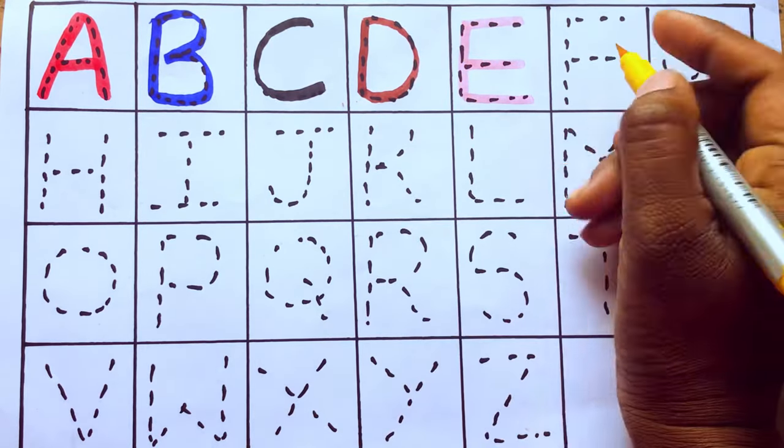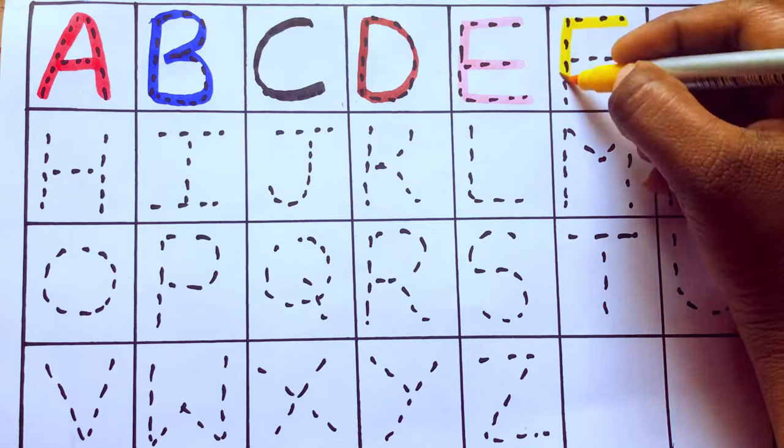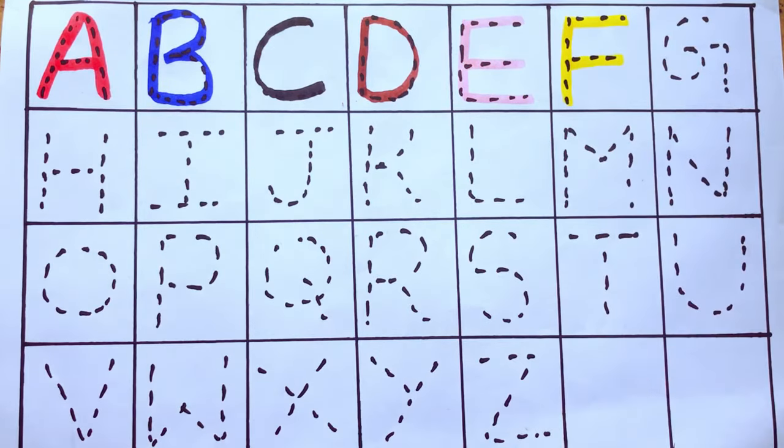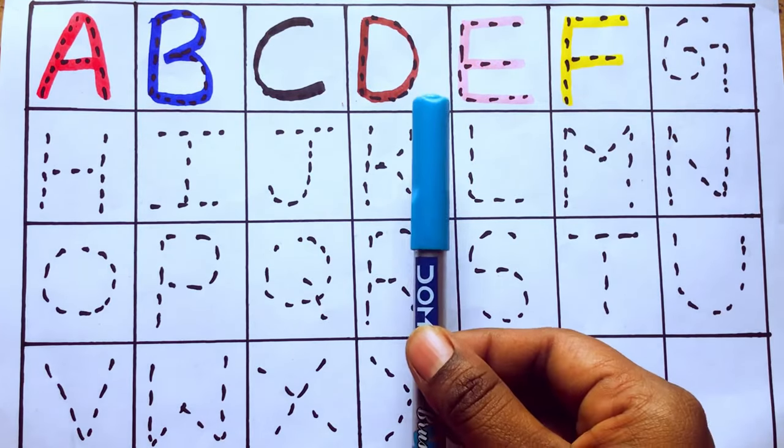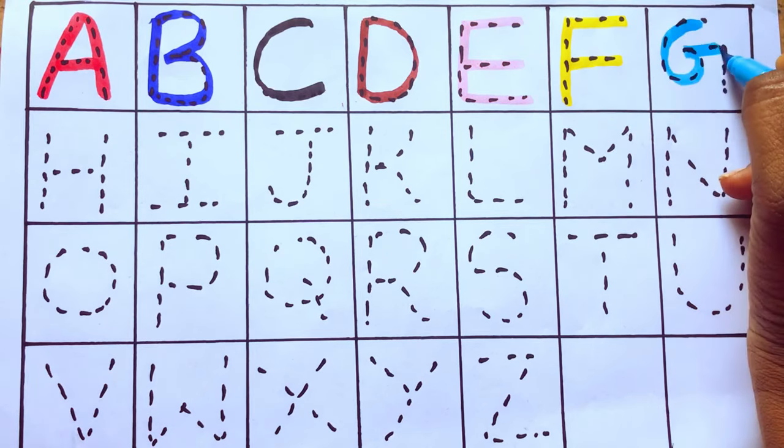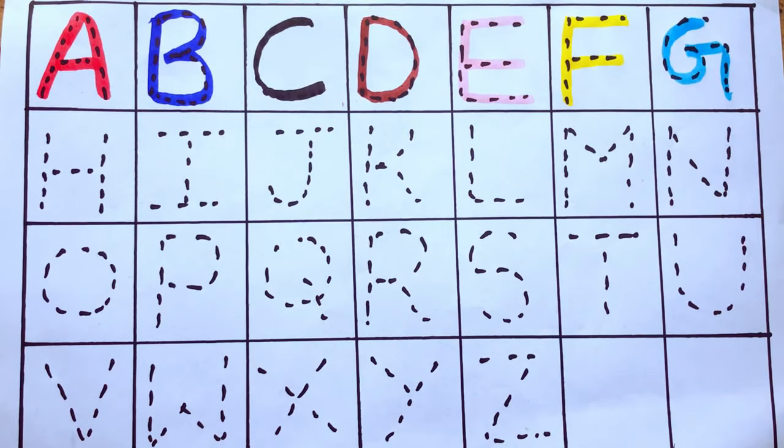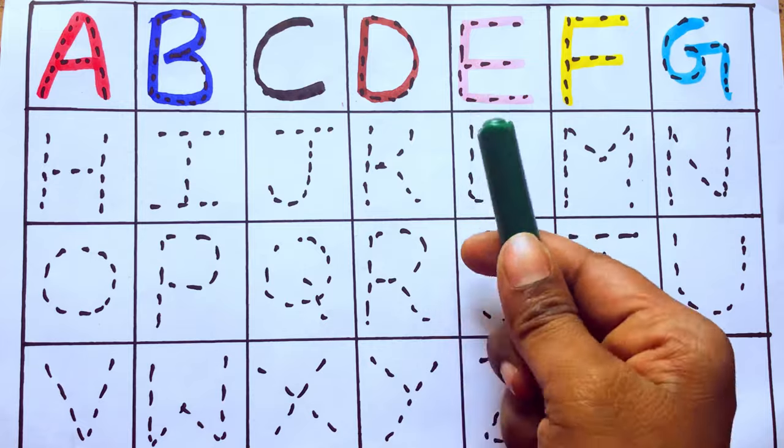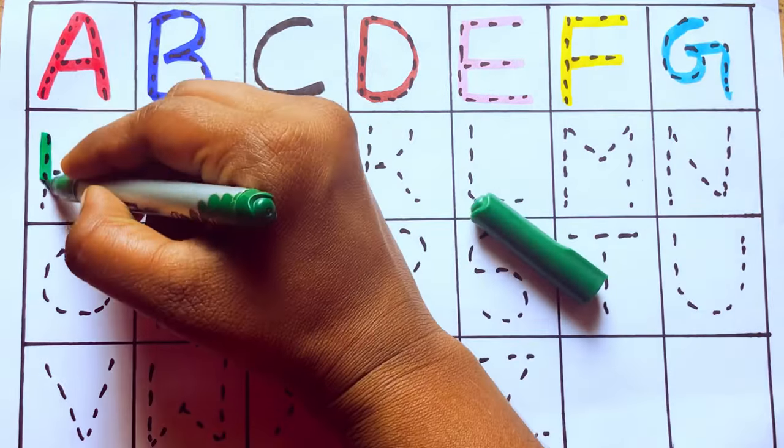Yellow color. F for fish, sky blue color. G for goat, green color. H for head.